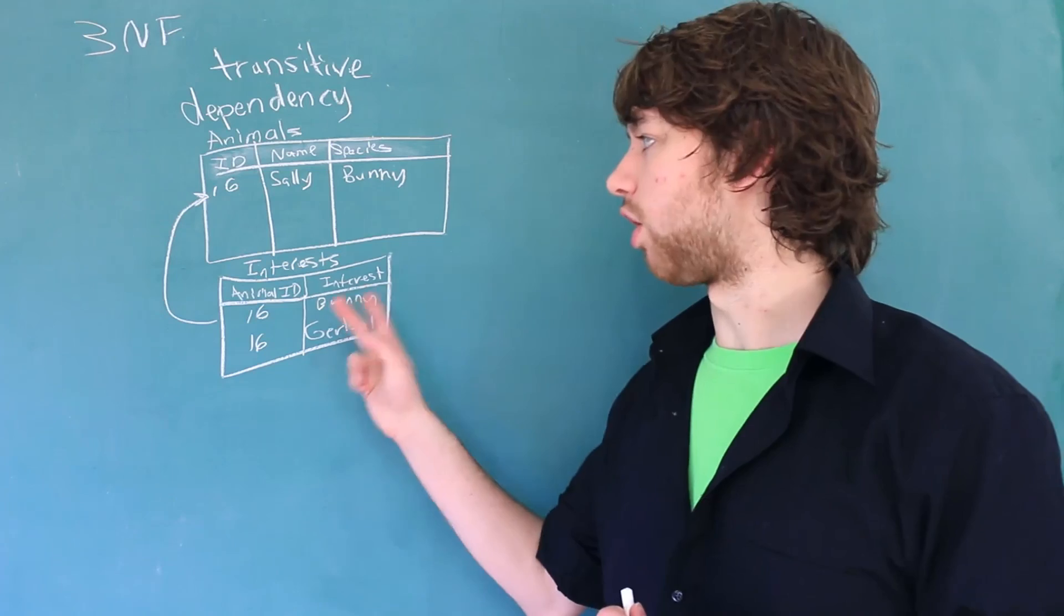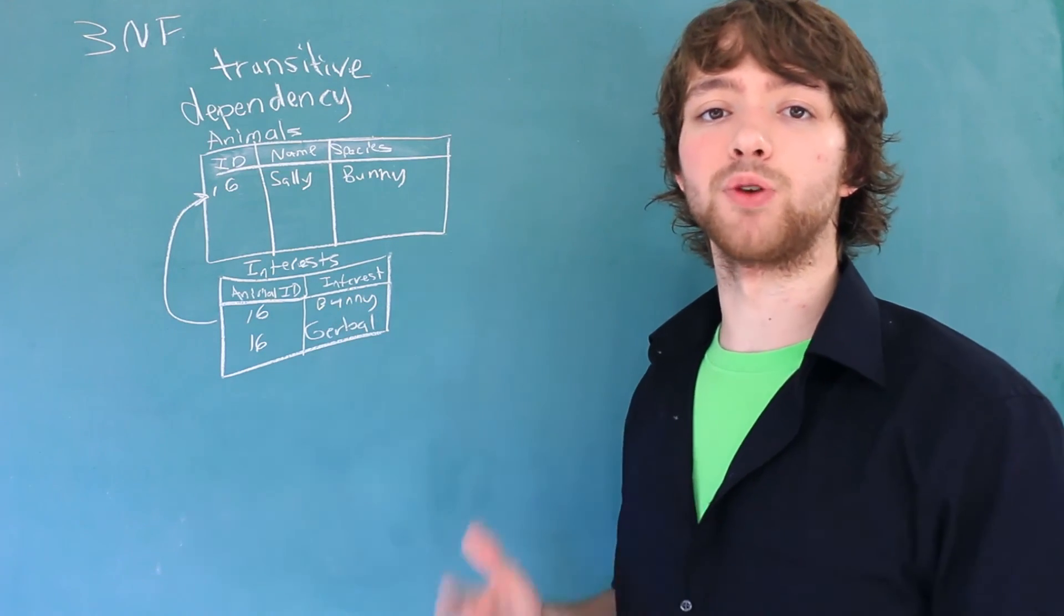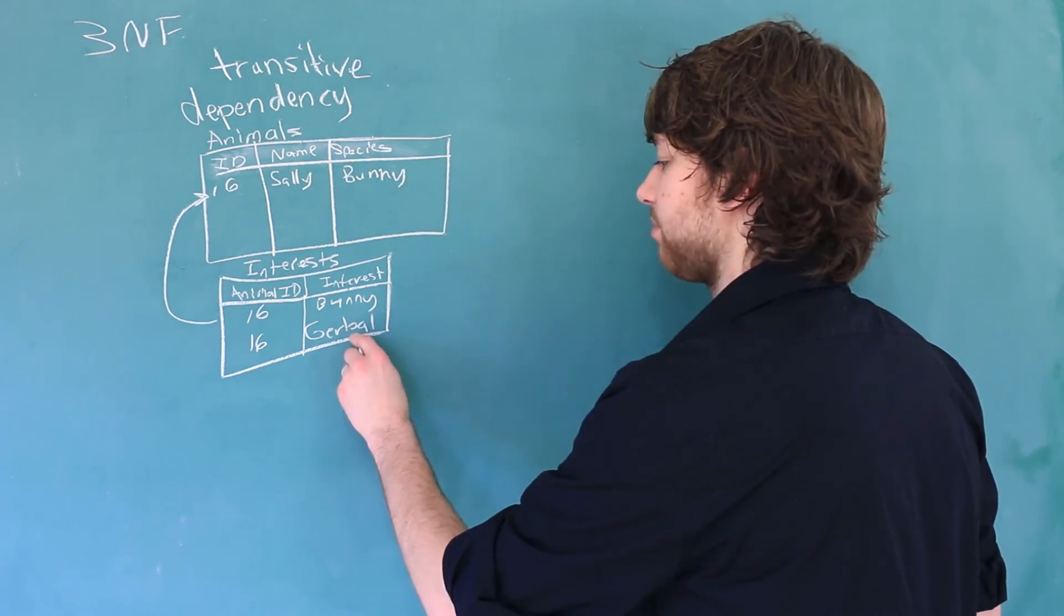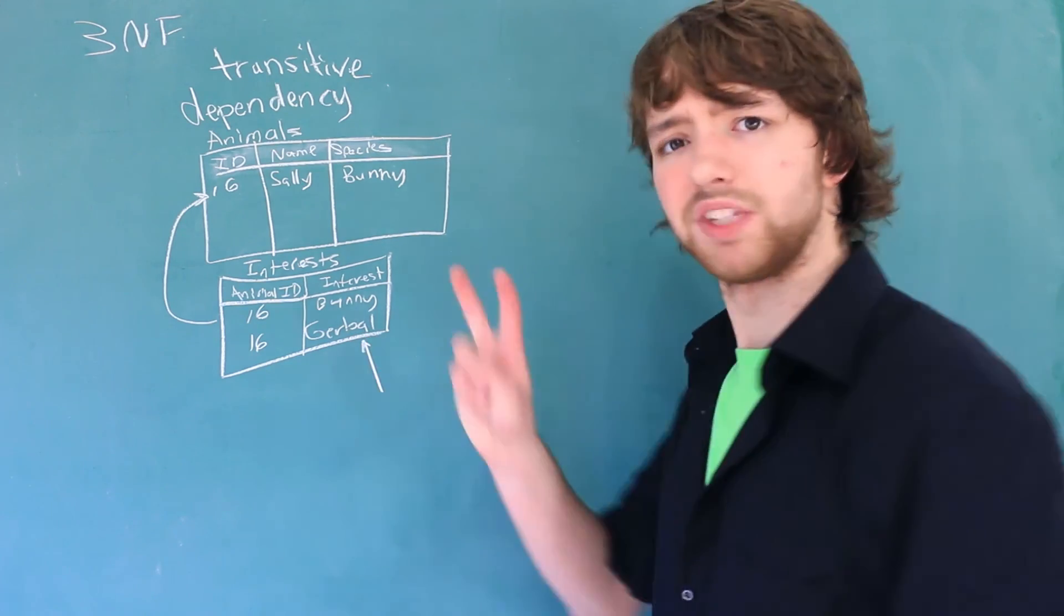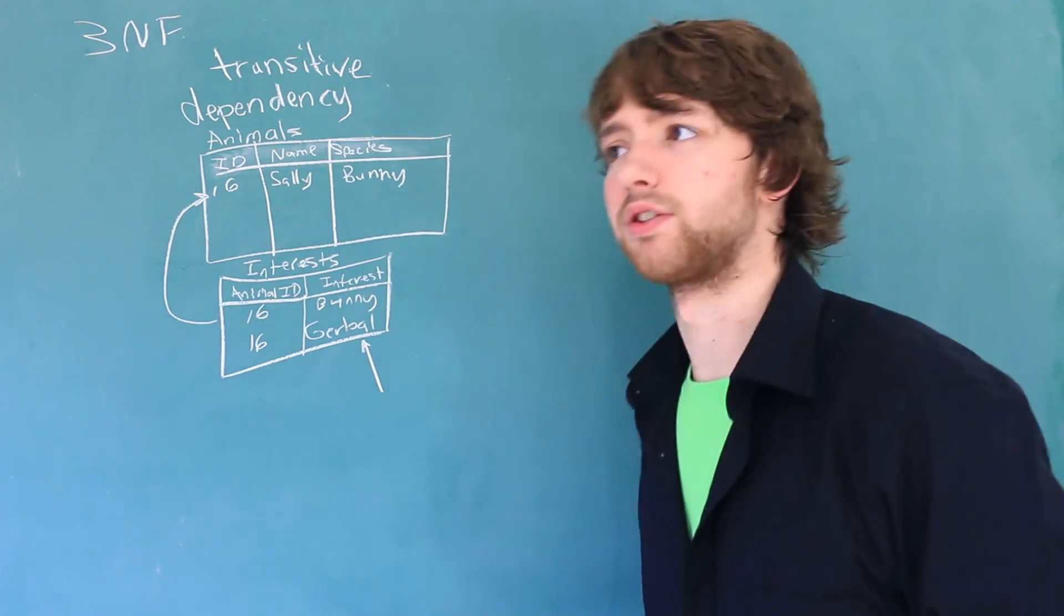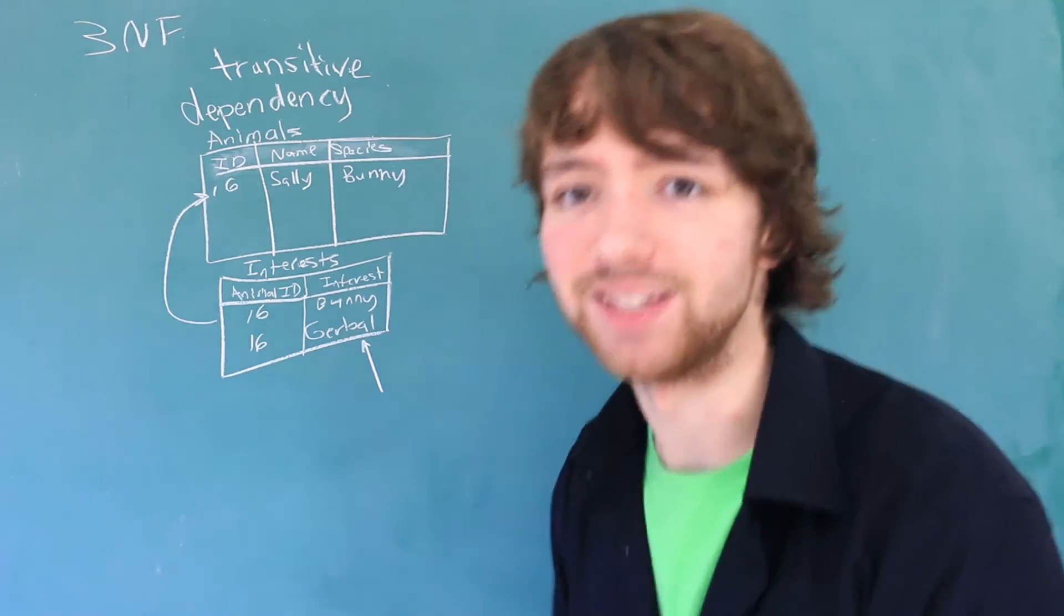So where does third normal form come in? Well, if we were to add columns to this interests table, you might run into some transitive dependencies. For example, here we have a species name, but it's really just a friendly species name.